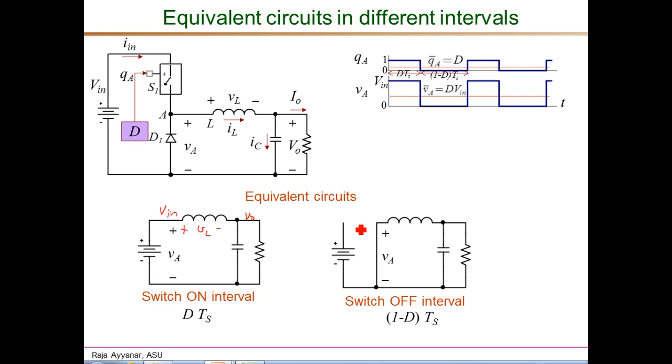Similarly, the other equivalent circuit valid in the switch-off interval is shown here. During this period or during this interval, S1 is off, so it is a complete open circuit. Since the diode is conducting during this interval, and we assume ideal device, the diode is a perfect short circuit, and then you have the LC and the load as before. In this interval, we can see that V_A is 0, and V_L would be 0 minus V_O, which is minus V_O.